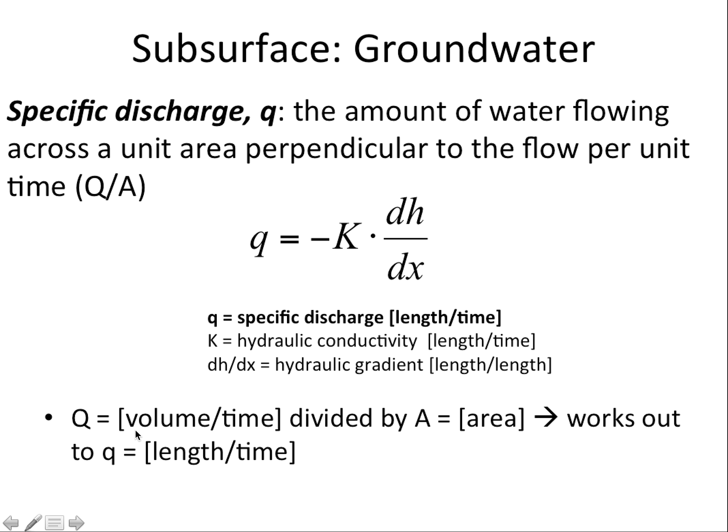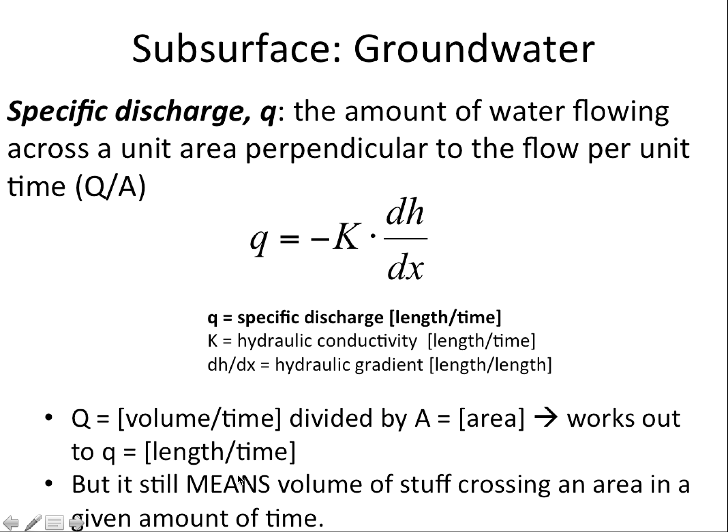Q is just volume per time divided by area, so the units work out to be length per time. But it actually means the volume of stuff crossing an area in the same direction as flow — perpendicular to the flow — in a given amount of time.